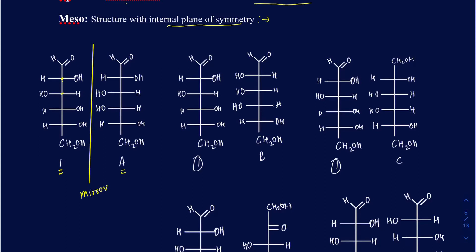If this were the mirror image, then everything should have been flipped. The OH that's on the second carbon — if I number the carbons 1, 2, 3, 4, 5, 6 — you have chiral centers at the second, third, fourth, and fifth carbon, and those positions must be flipped on the other structure to make an enantiomer. However, the OH which is on the right side at the second position in structure 1 is still on the right side in structure A. So it's not flipped, which means it's not an enantiomer.